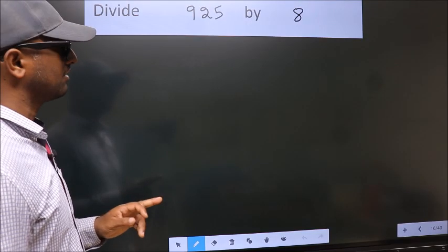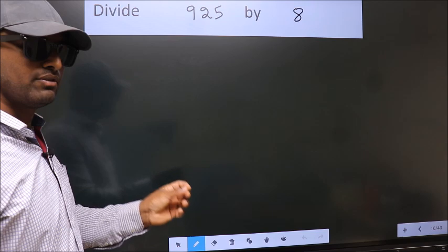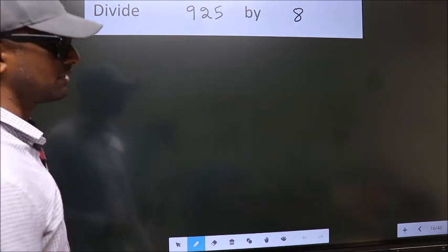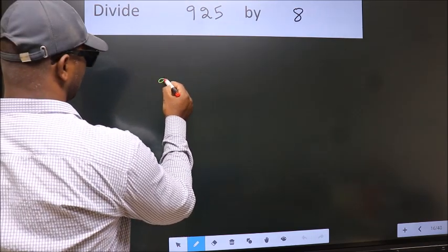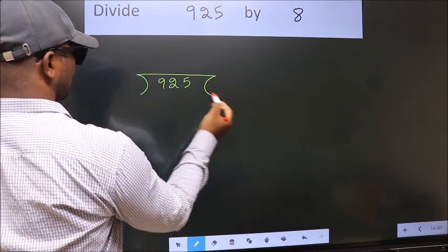Divide 9.25 by 8. To do this division, we should frame it in this way. 9.25 here, 8 here.